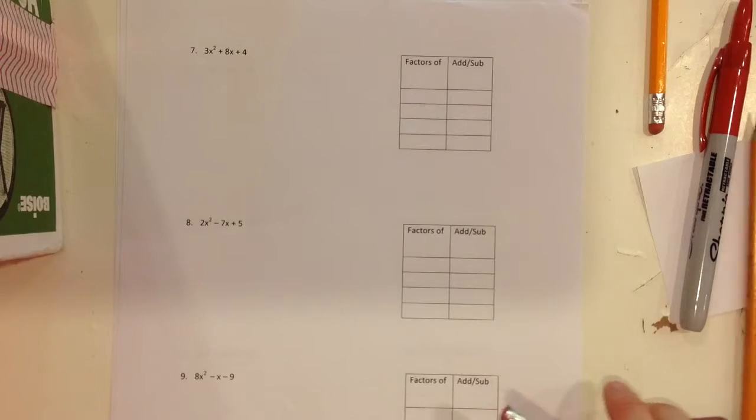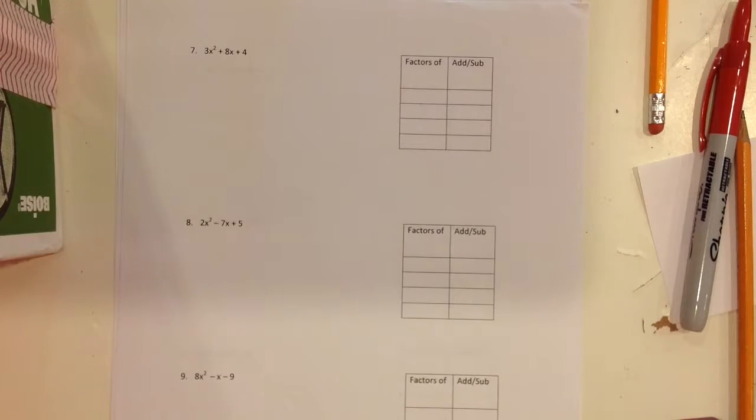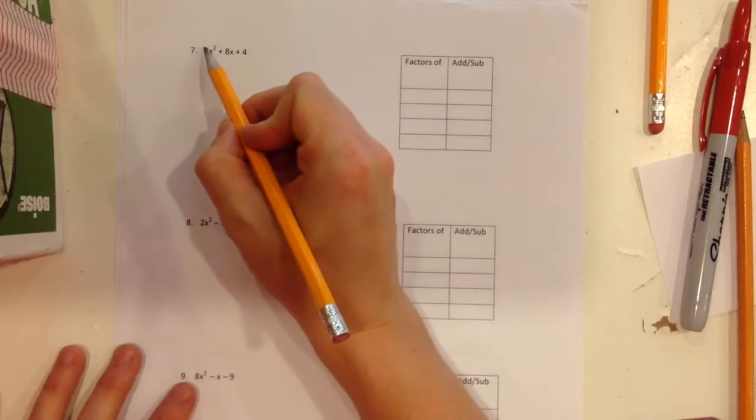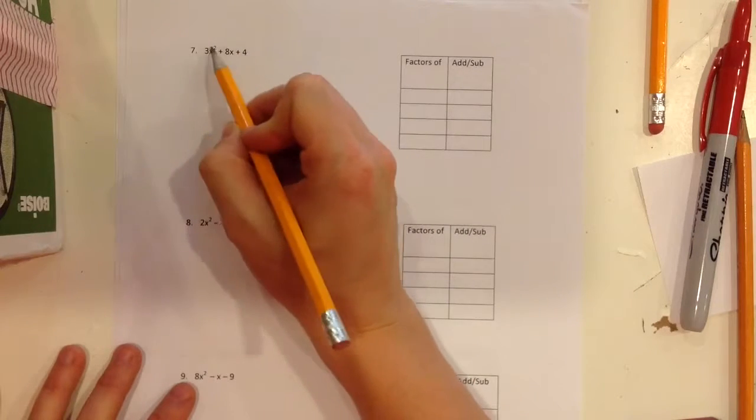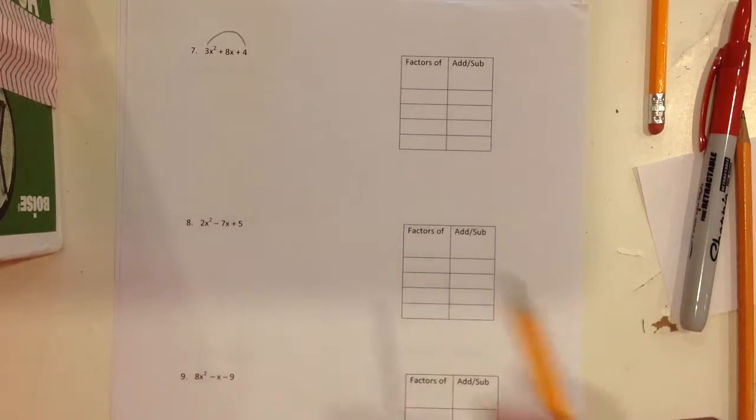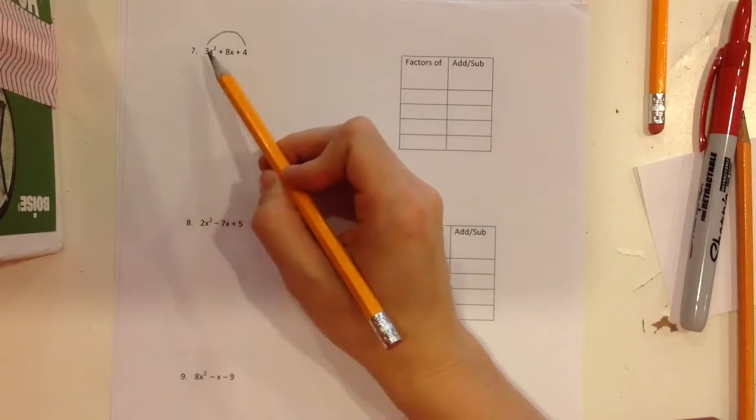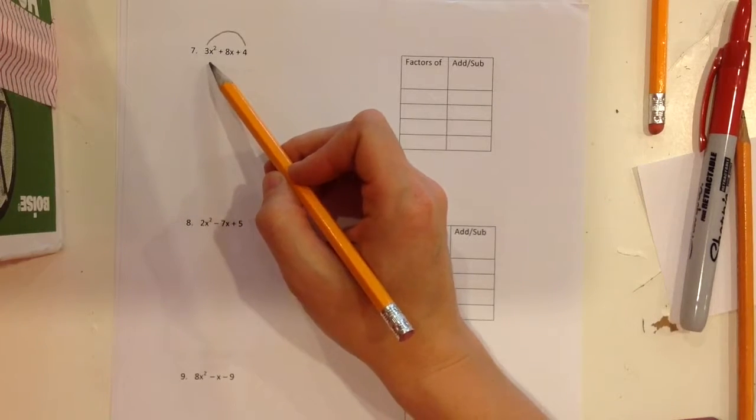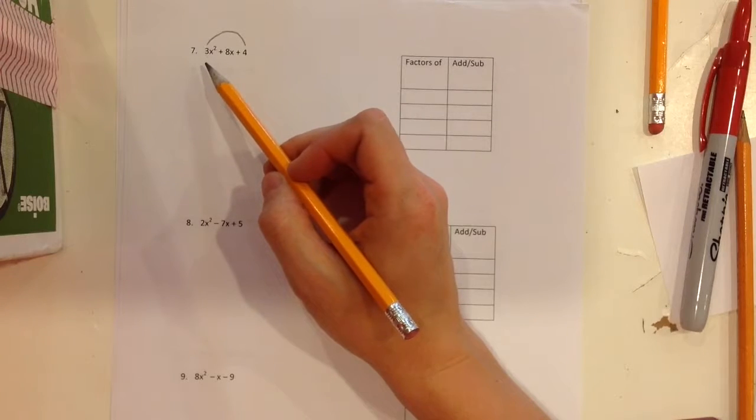Alright, continuing on with our factoring trinomials, we have another trinomial. So I have 3, 8, and a 4. It doesn't look like I'm going to have a GCF on this one. This is the first time that we're going to have a leading term in front of our variable, x squared, and we won't have a GCF to take out. So these are going to work a little differently than we had in our first couple of examples.